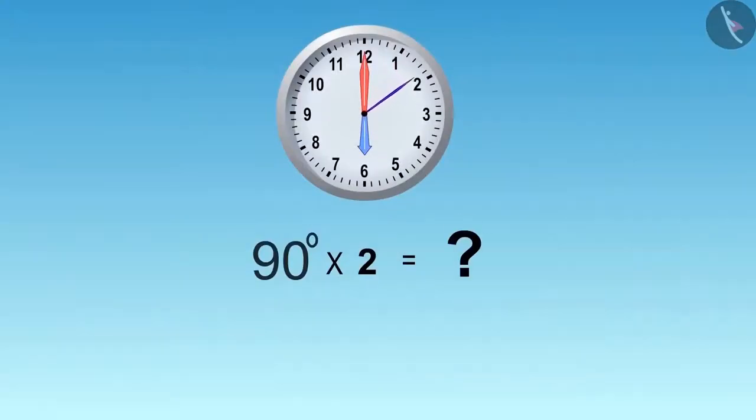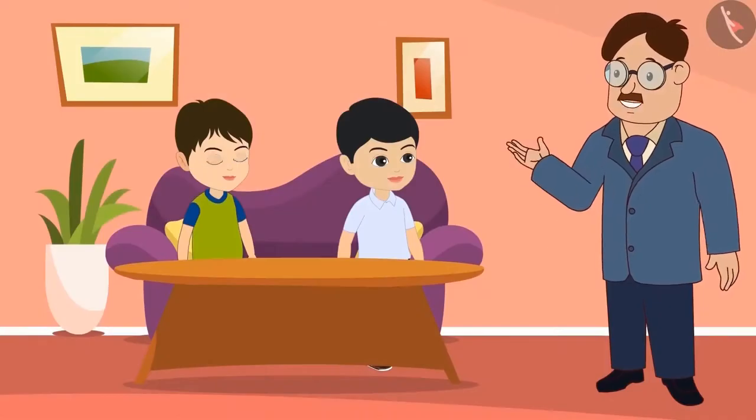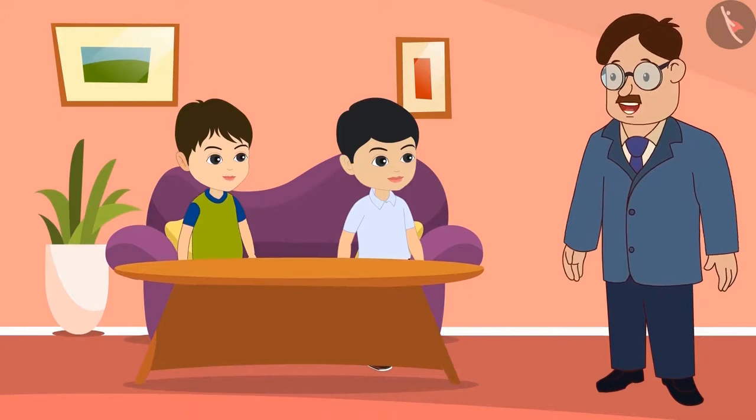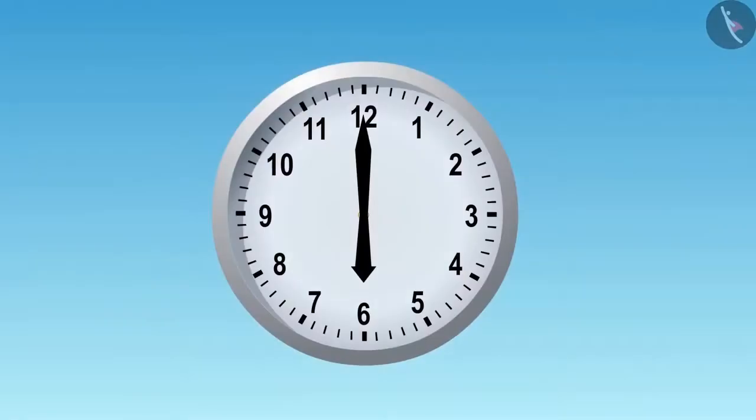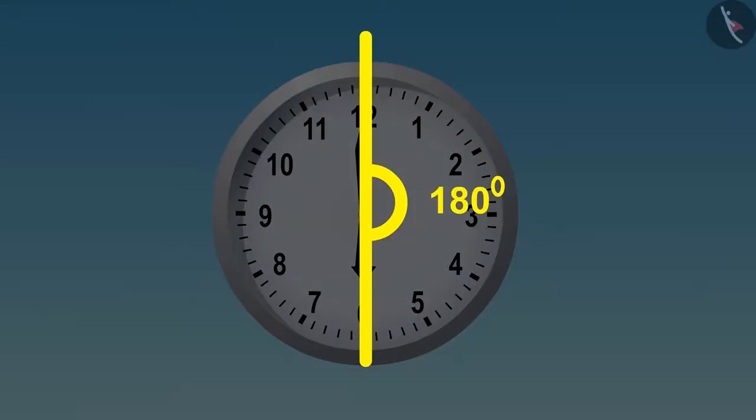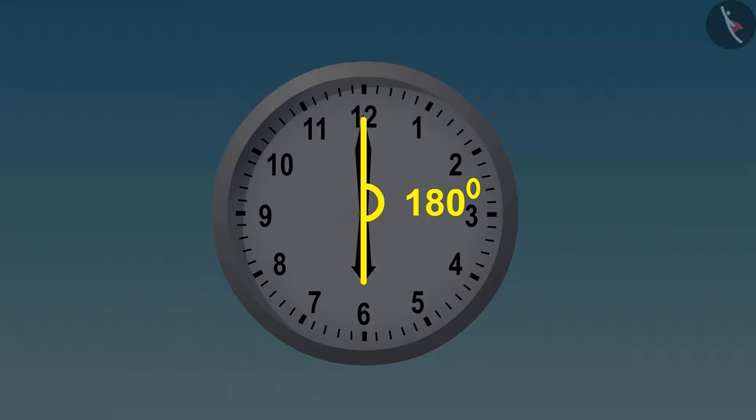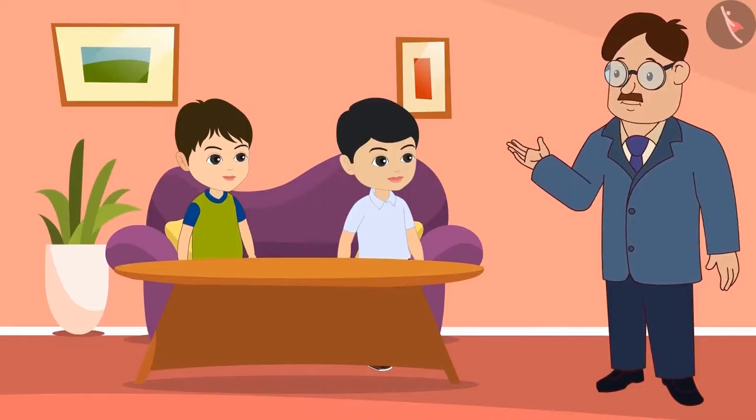Okay, children. Can you tell now what is the double of ninety degrees? Uncle, double of ninety is one eighty degrees. Absolutely correct, Golu. Now, look at this angle, children. This is double of ninety degrees. That is one hundred and eighty degrees angle. That means this angle is made by joining two ninety degrees. Yes, Bolu.